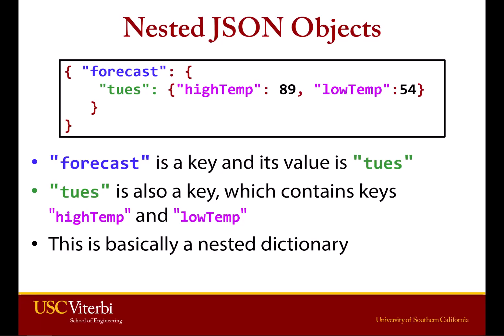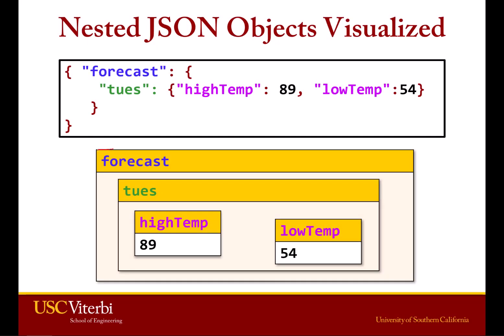Where JSON becomes powerful is when we have objects inside of one another — a nested JSON object. We have an outer curly brace, and 'forecast' is a key. The value stored at that key is another dictionary. Inside that dictionary, we have another key, 'Tuesday', which itself contains key-value pairs like high temp and low temp. We just go level by level and access the information. Forecast is the outer key, Tuesday is the next level, and inside of that we have high temp and low temp.